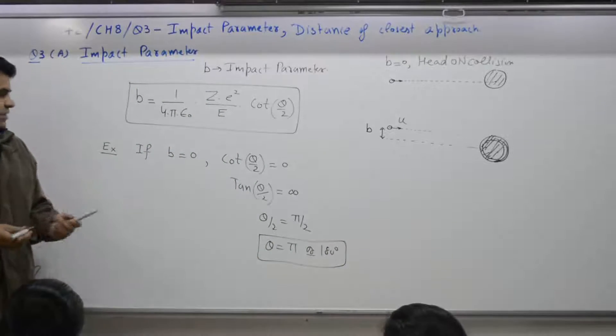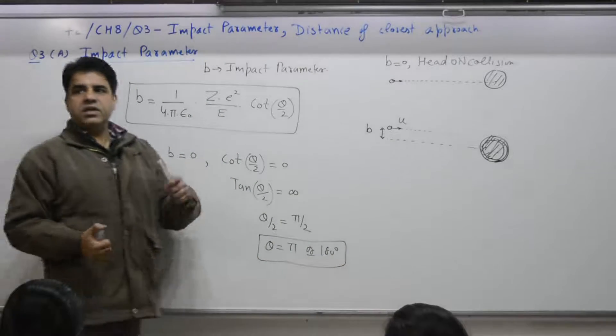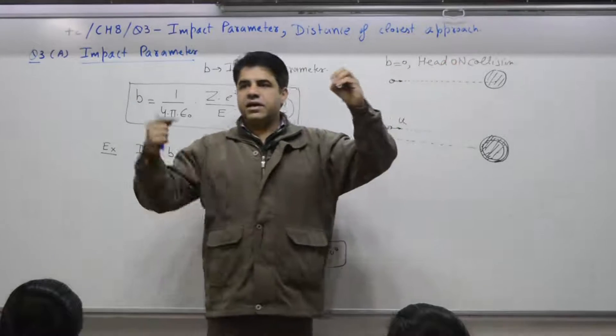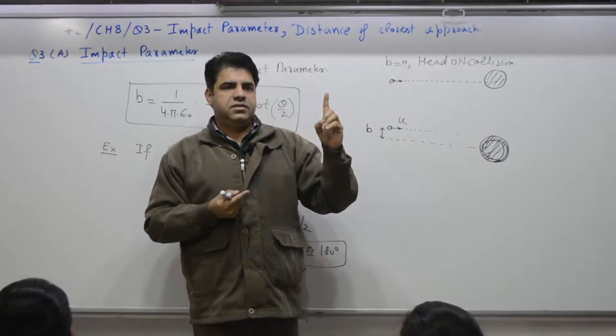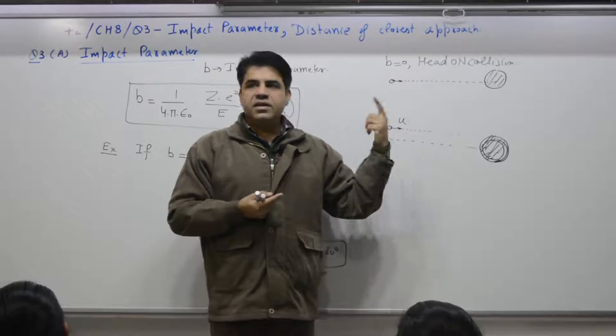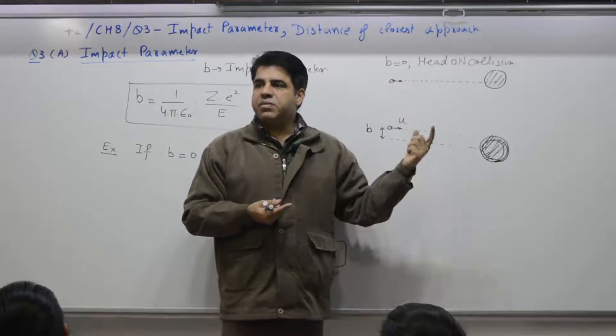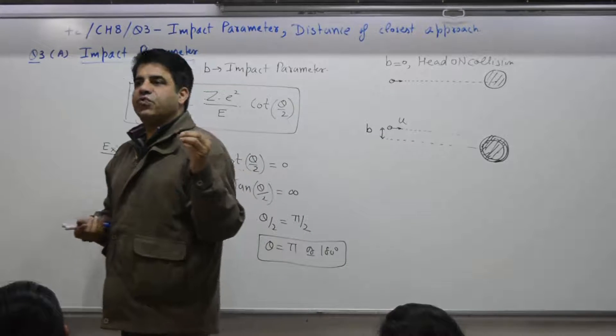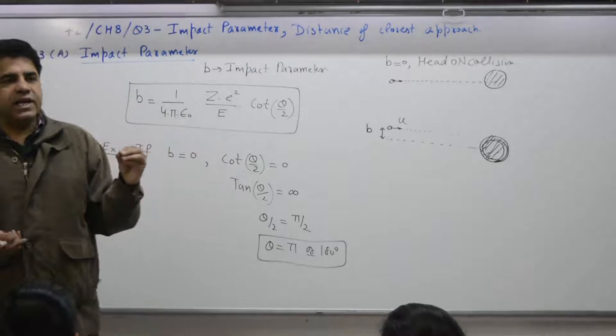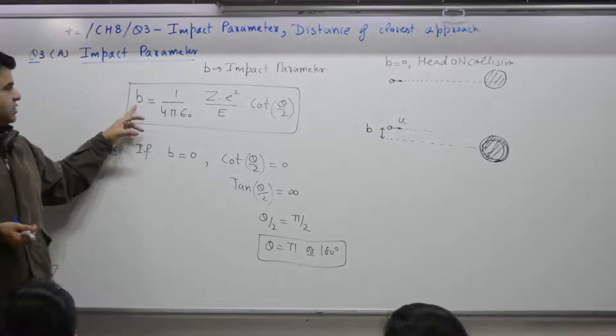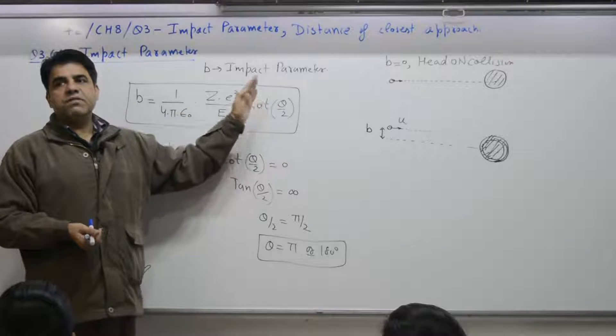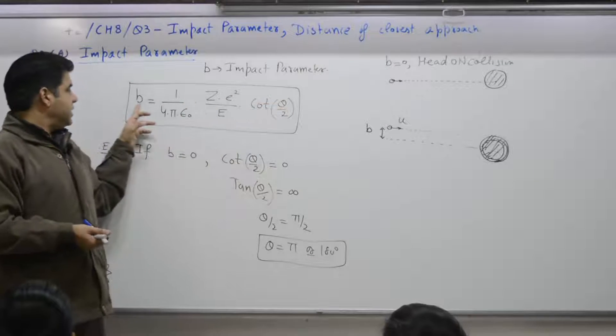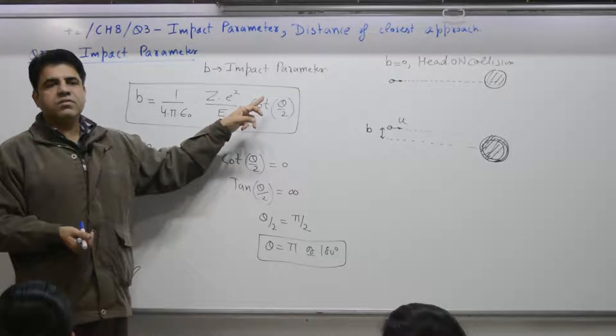If B is 0 means what? If there is a nuclei, alpha particle undergoes head-on collision, then particle will retrace its path, will undergo maximum deviation of what angle? 180 degree. So the relationship with B is what? B is what? Impact parameter. Theta is what? Deflection. When B is 0, theta is 180 degree.